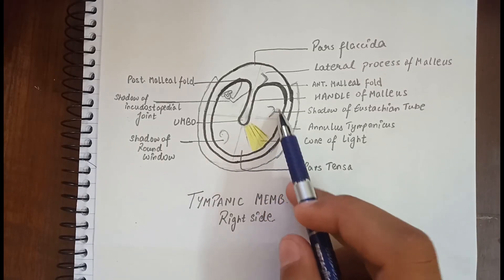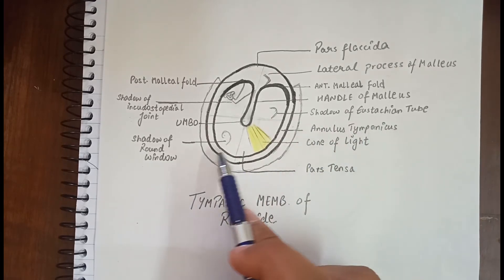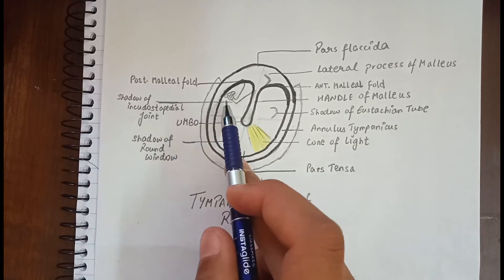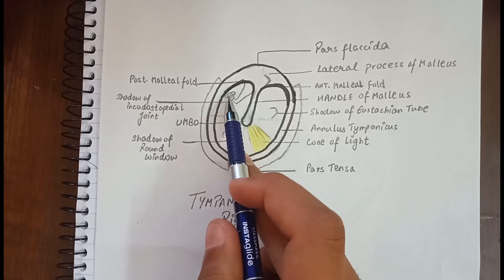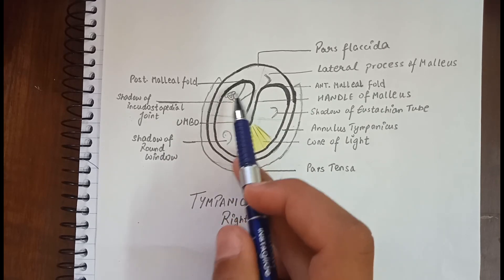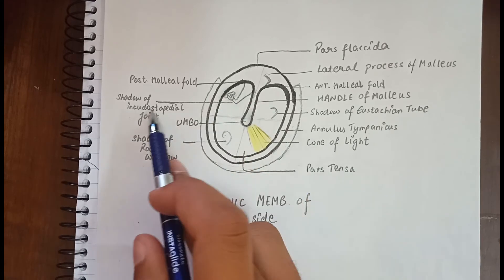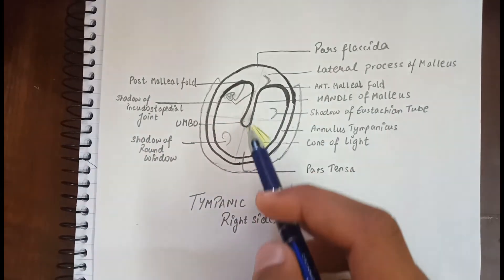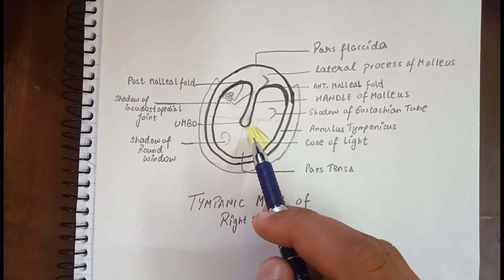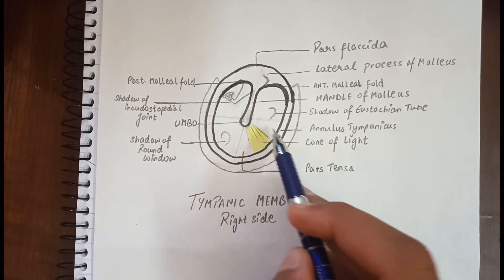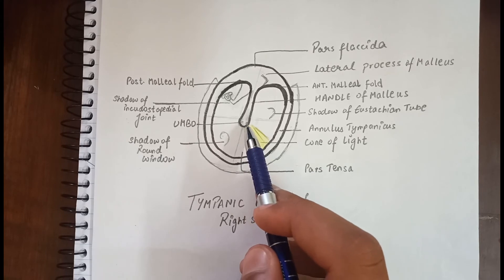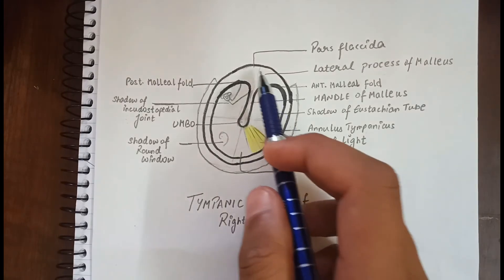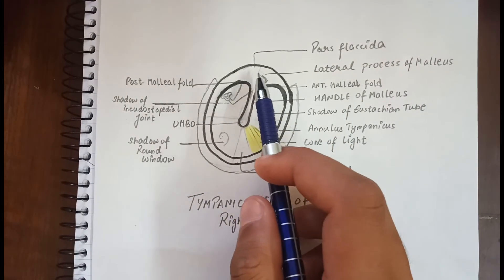Different shadows can be seen in the tympanic membrane when a strong light is thrown: the shadow of the Eustachian tube, the shadow of the round window, and the incudostapedial joint — the joint between the incus and the stapes. There are three auditory ossicles: the malleus, incus, and stapes. The tympanic membrane is divided into four quadrants, and in the anterior inferior quadrant, a cone of light can be seen reflected from the tip of the handle of malleus.